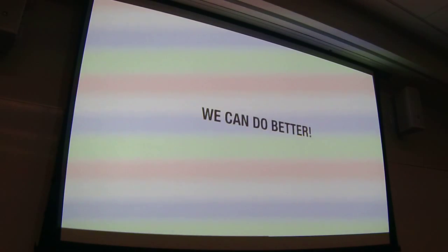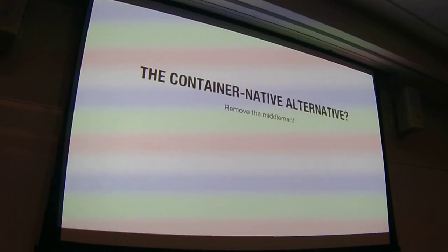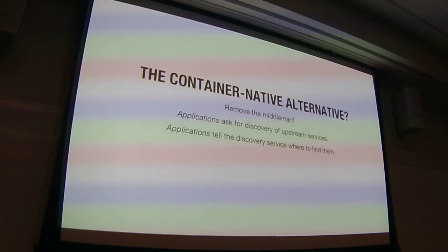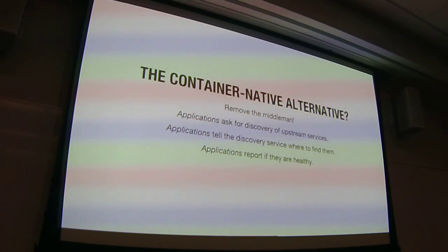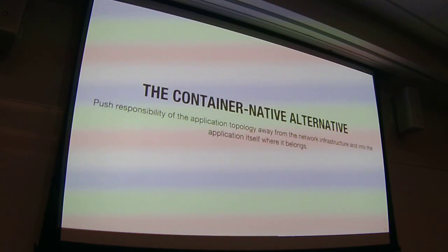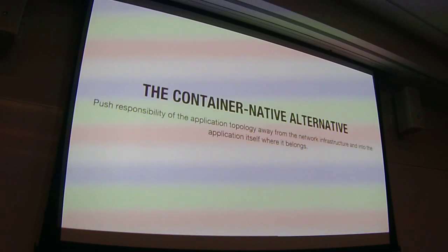The big thing I'm leading up to is that we can do better by removing these middlemen. The application should have the job of discovering what it needs for upstream services, telling the discovery service where to find it, and reporting its own health. The notion that you don't have to do anything different in your application is wrong. We should be pushing responsibility for application behavior away from the network infrastructure — which doesn't have the intelligence to do this work — and into the application and scheduler, which is the only place we have the intelligence for a correctly automated solution.